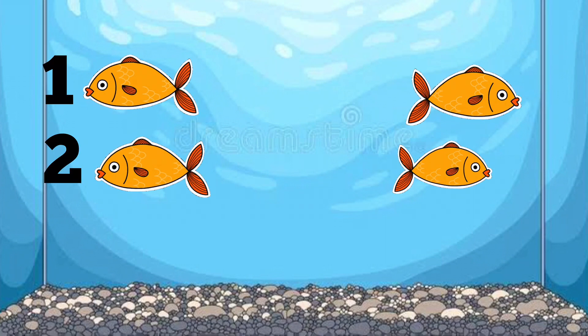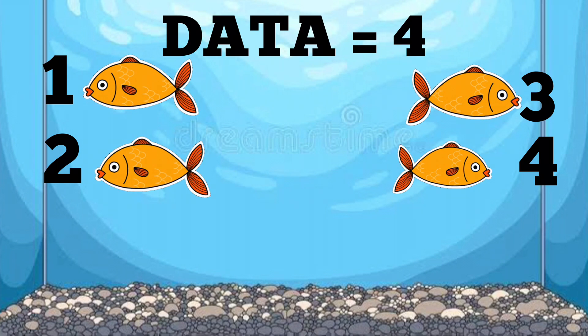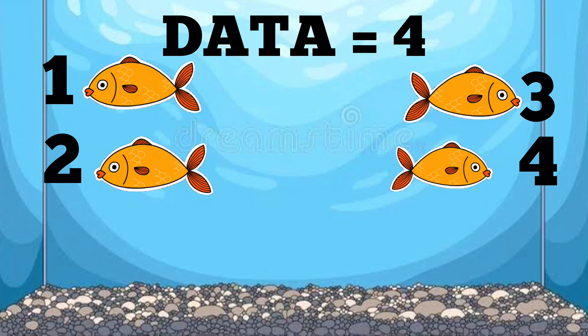One, two, three, four. Four fishes. Hence the data is four. Number of orange fishes is four.